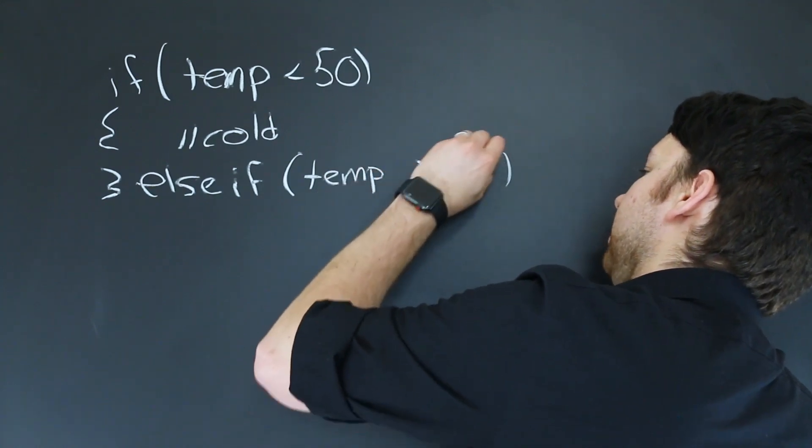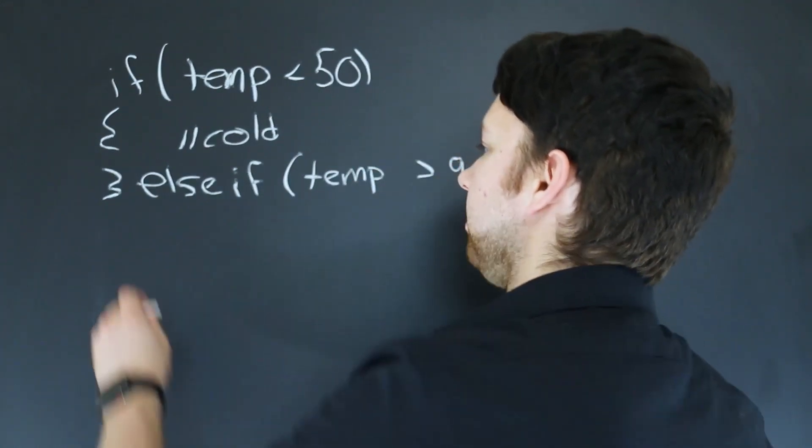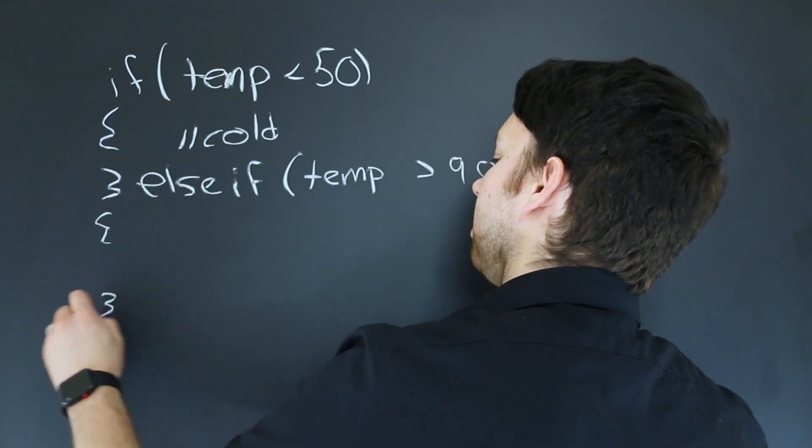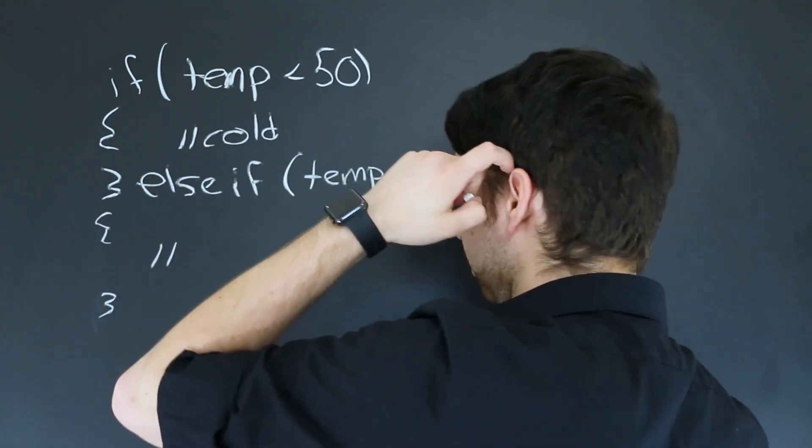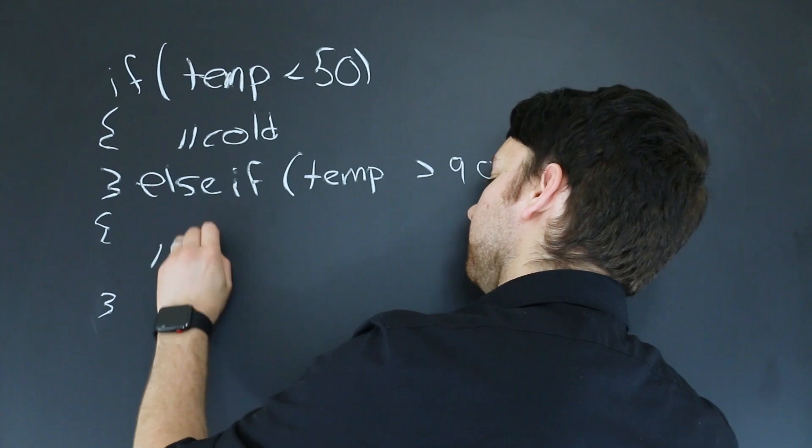Temp greater than 90. In other words it's super hot. And then you do another curly braces pair and then do whatever code you want for that. So now it's super hot.